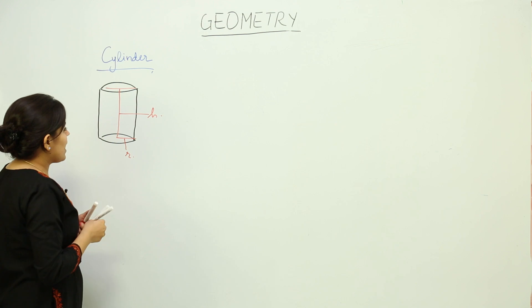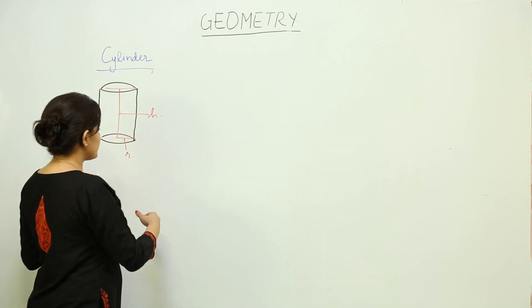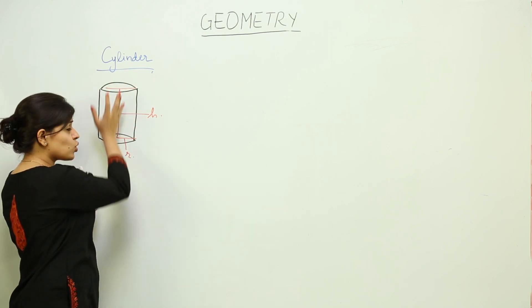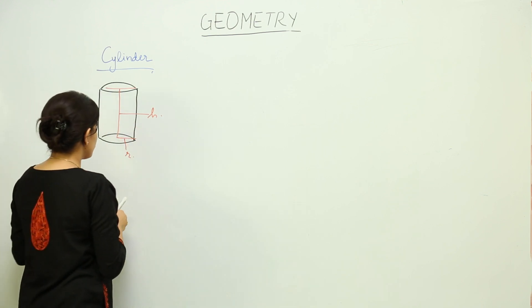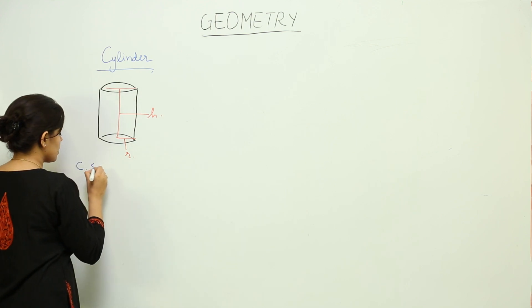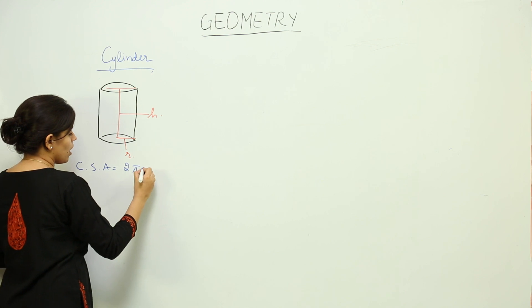What is the curved surface area of a cylinder? The curved surface area does not include the upper lid or the lower lid. It is considered that it is hollow from between and we have to consider only the curved part. The curved surface area of the cylinder is 2πrh.